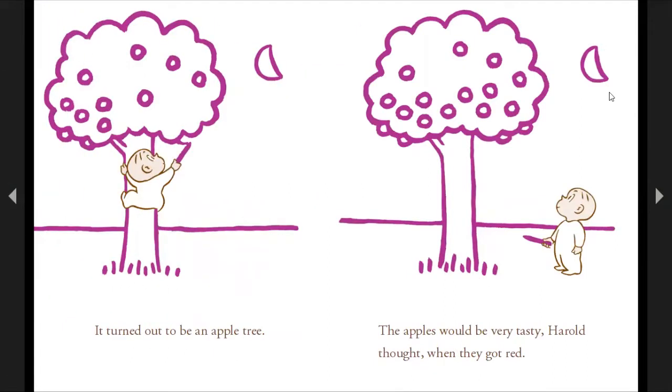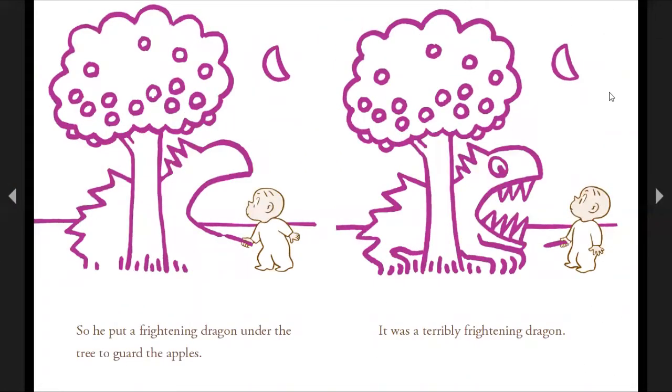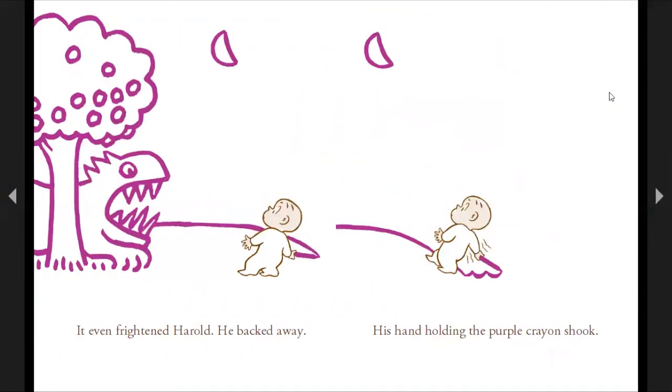It turned out to be an apple tree. The apples would be very tasty, Harold thought when they got red. So he put a frightening dragon under the tree to guard the apples. It was a terribly frightening dragon. It even frightened Harold. He backed away. His hand holding the purple crayon shook.